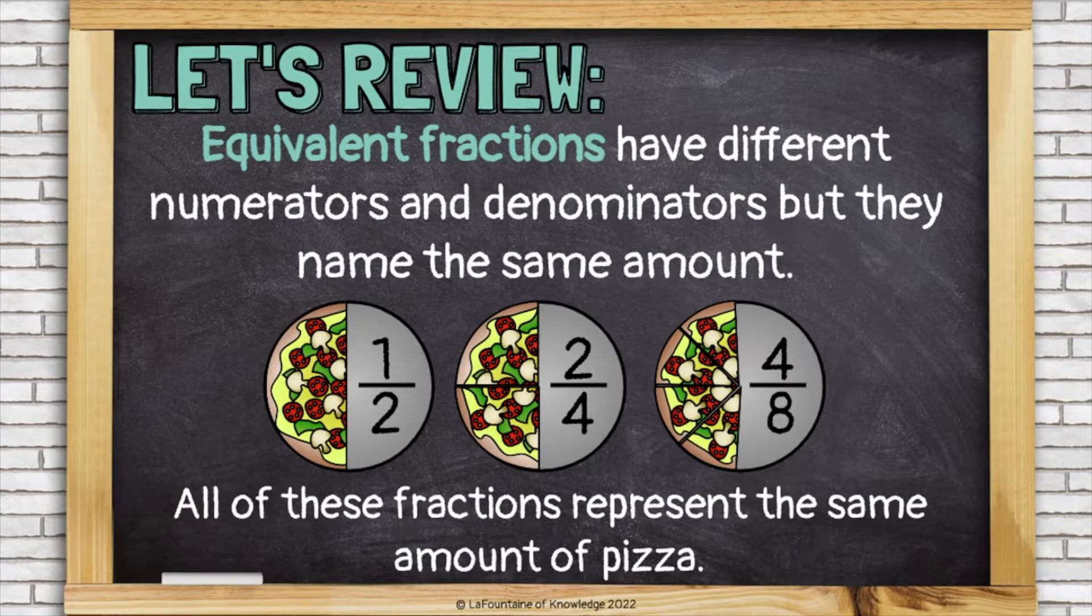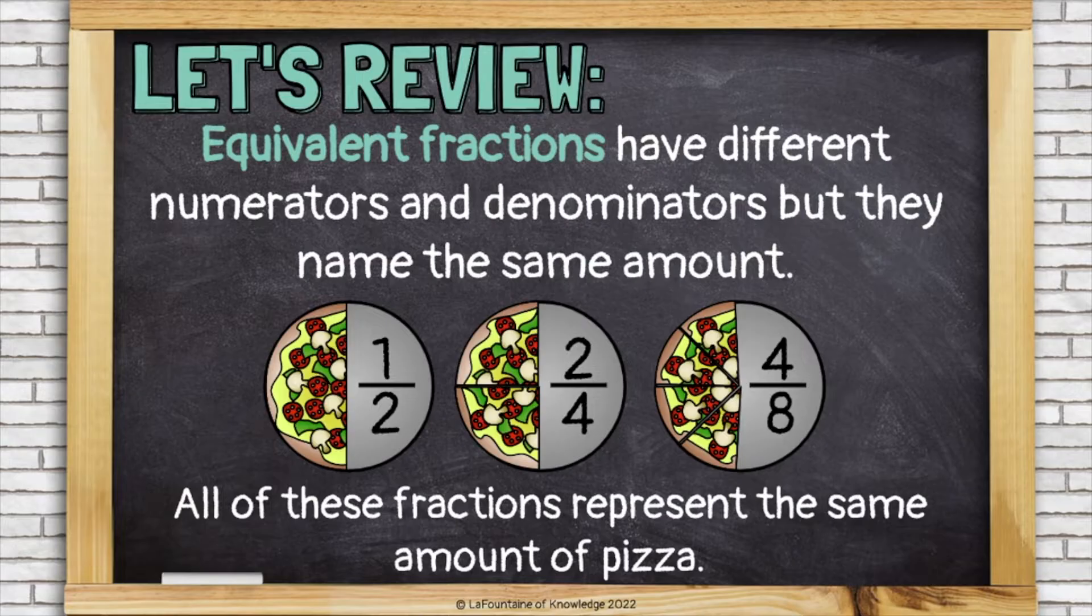Here we have one half of a pizza, two fourths of a pizza, and four eighths of a pizza. All of these fractions represent the same amount of pizza. They are equivalent fractions.